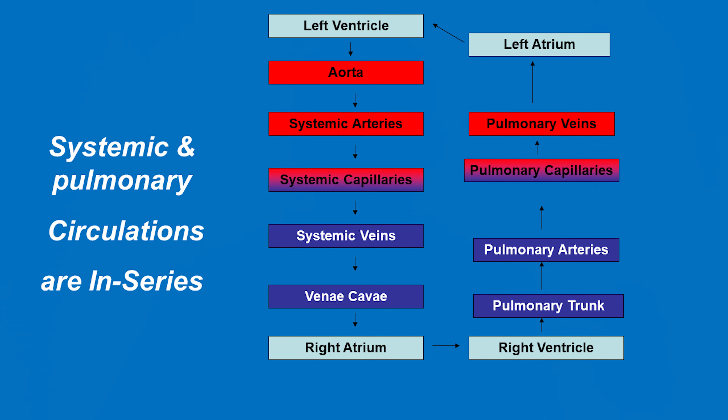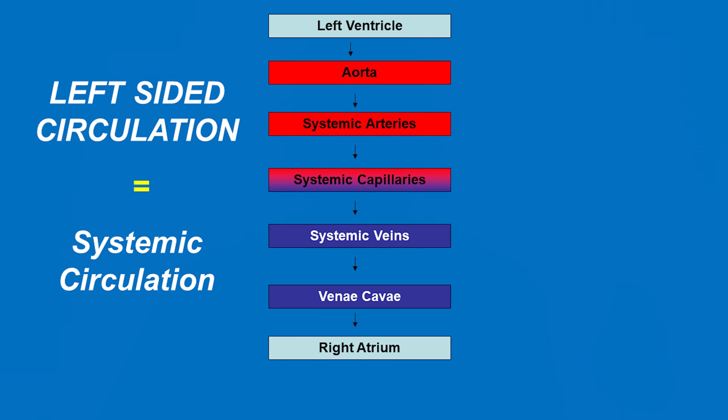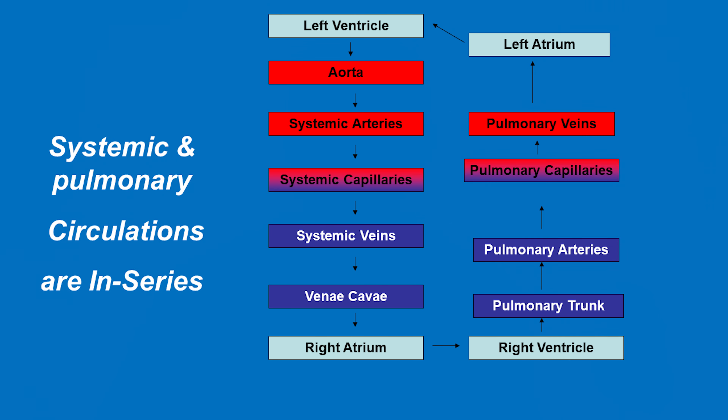As you can now appreciate, there are two circulations in the body and the function of the heart is to maintain both of these circulations in series. The right-sided circulation is also known as the pulmonary circulation, and the left-sided circulation is also known as the systemic circulation. Both of these circulations work in series, as shown here in this diagram.